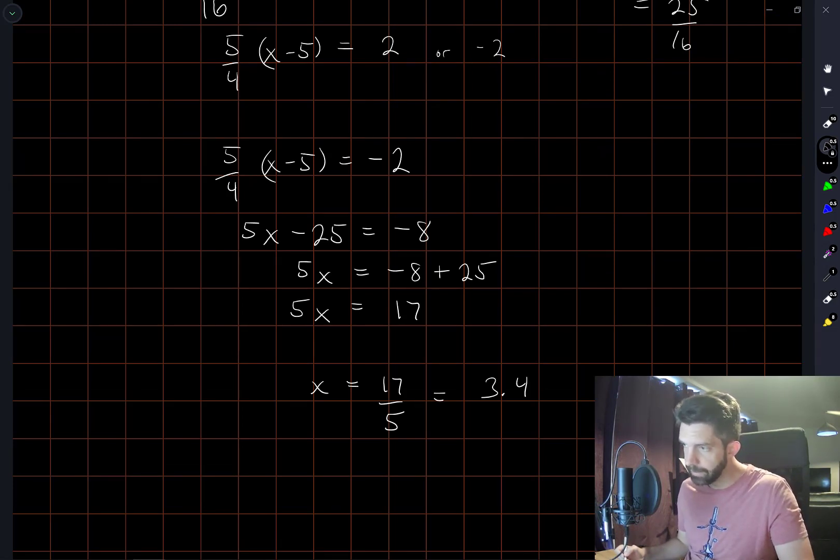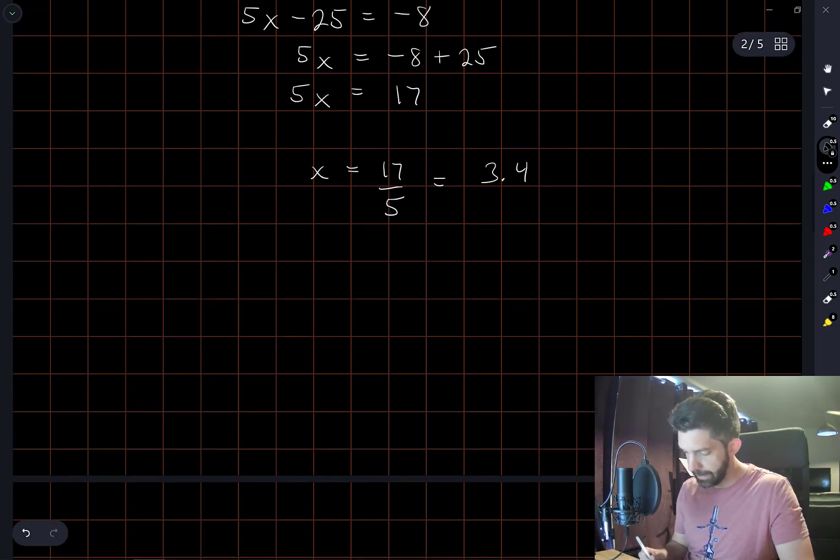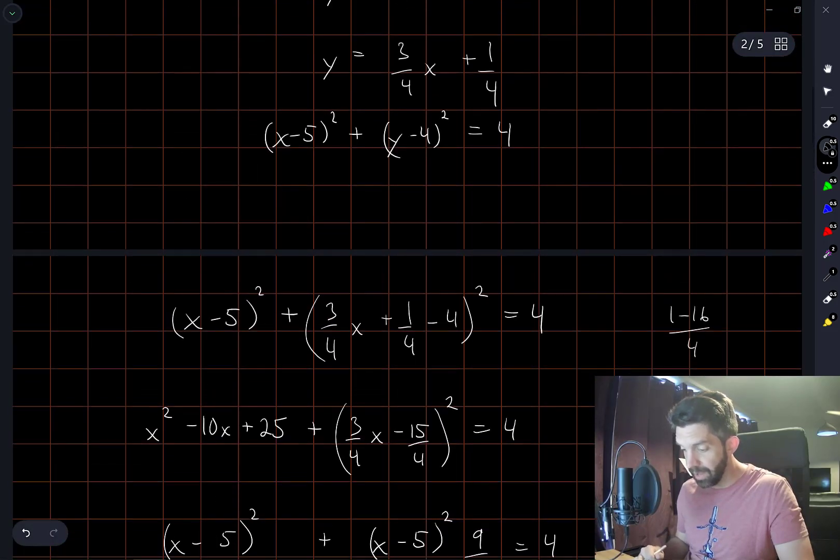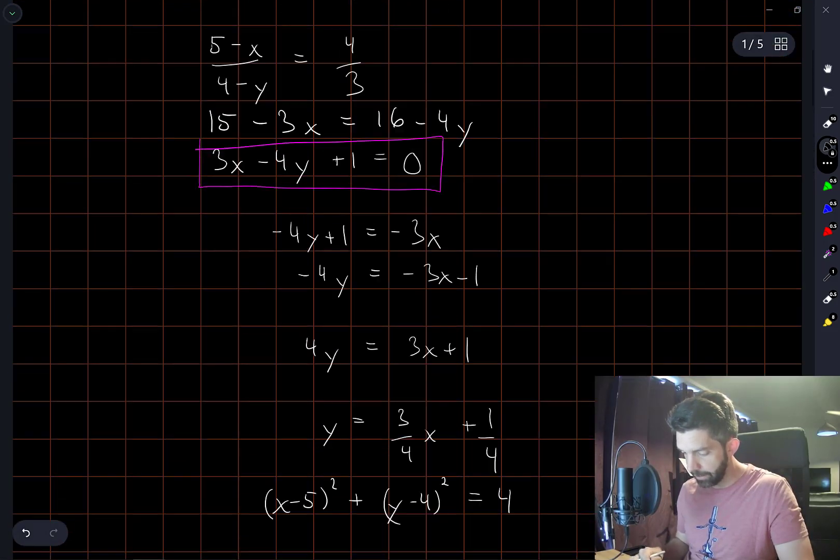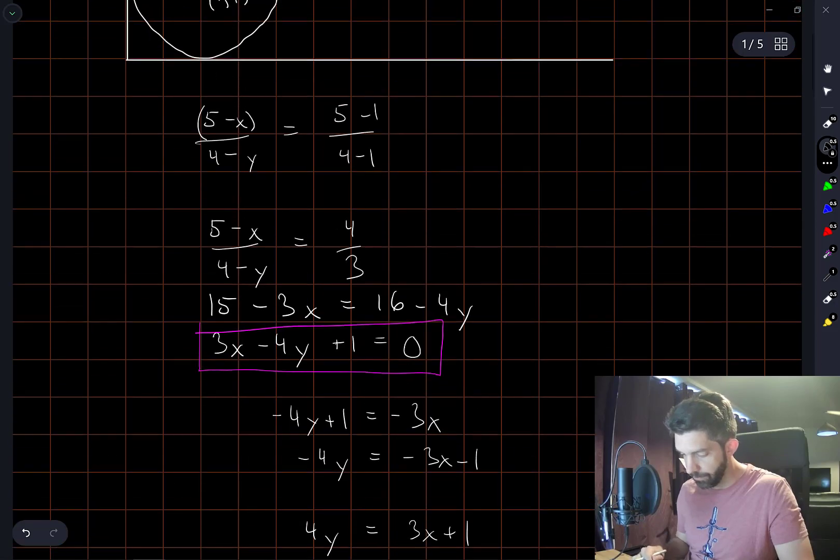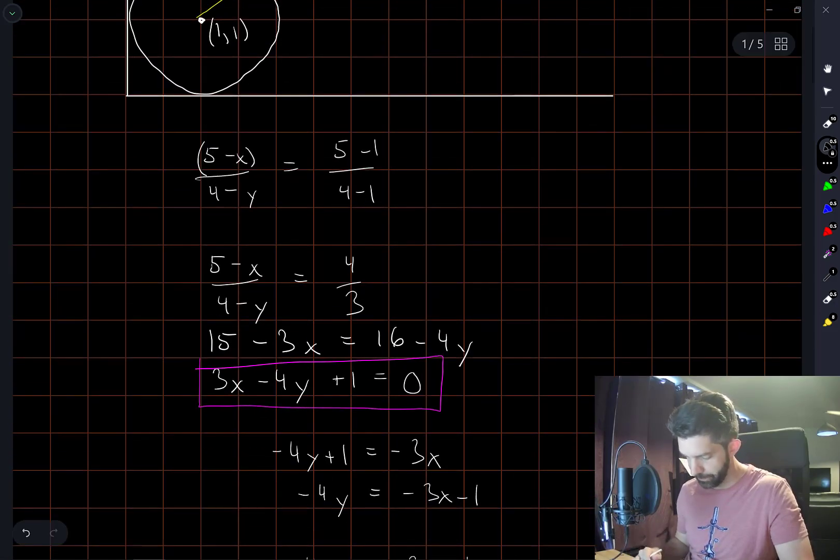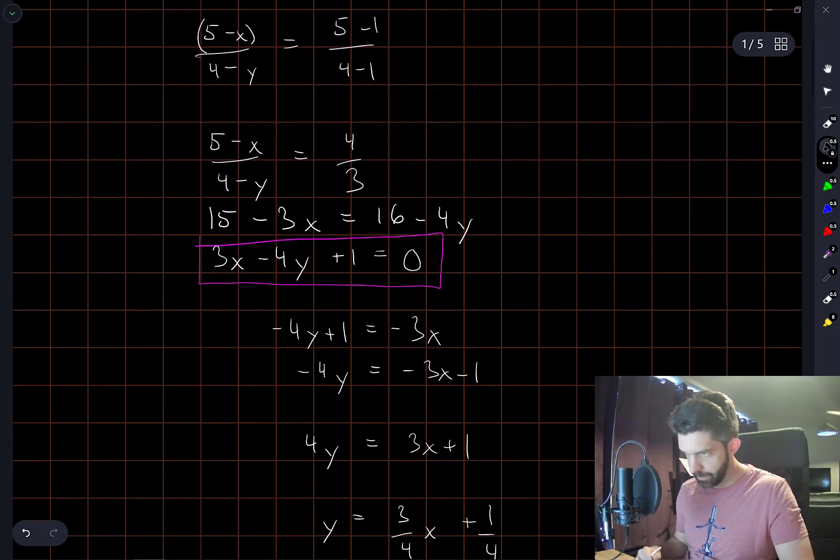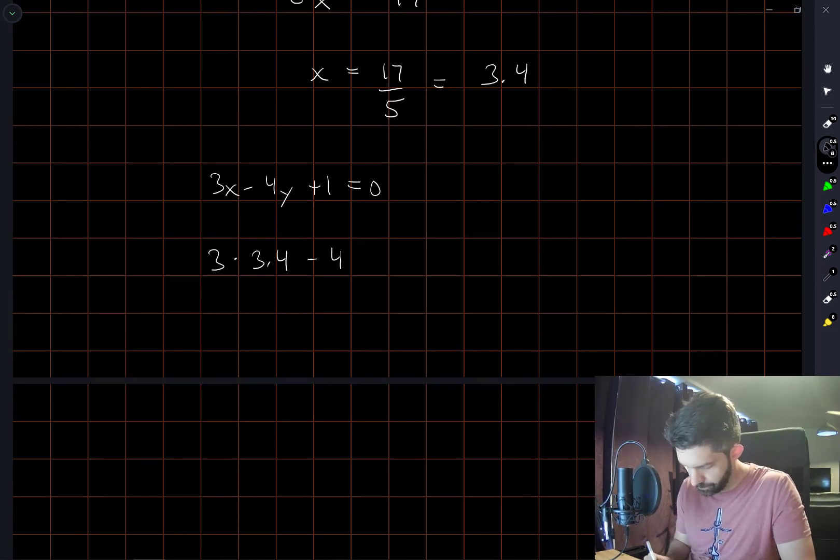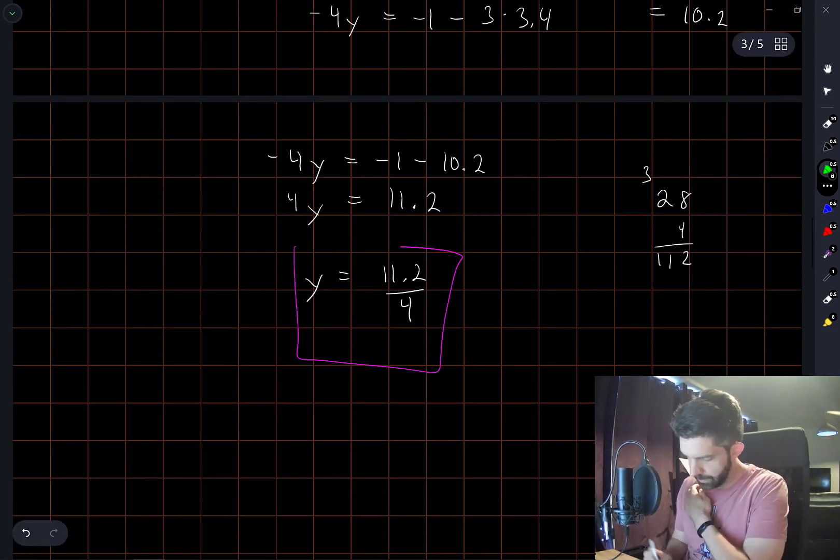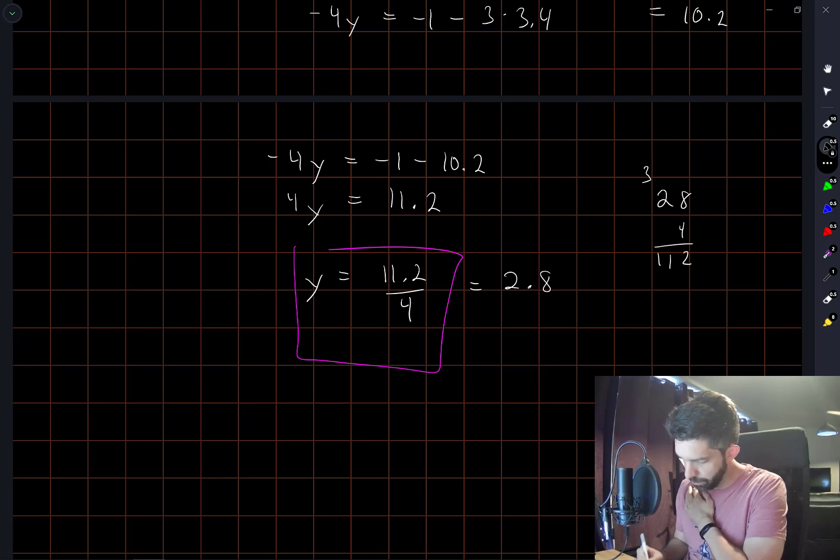There's only one of the multiple choice options which has an x value of 3.4. But let's just check by going back to the equation of the line, that when I let x equal 3.4, that the value of y does correspond to 2.8. Yeah, so this fraction does in fact equal 2.8.